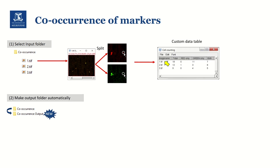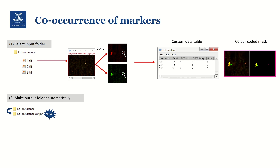Then we can log this counting result onto our own result table. Unlike the default result table from ImageJ, we can set what we want to log in this table. So from each image, we will log the image name and how many cells we have detected in total, and the breakdown of each group — how many cells are positive to only red, positive to only green, or positive to both. Also in this example, we will make a proof image that shows the raw image and our counting result combined together, so we can double-check the result visually. The double-labeled cells will be colored as yellow and single-labeled cells will be colored either as green or red to show which cell was counted in which group.